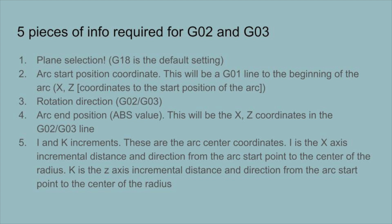The arc start position will be the G01 line at the beginning of the arc. Then we need to know the rotation direction of the arc, and then the arc end position — this will be an X and Z value inside our G02 or G03 line, swinging to the end of the arc. Accompanying the G02 and G03 line are I and K increments, which are incremental movements to the arc center coordinates. I is for the X axis and K is for the Z.